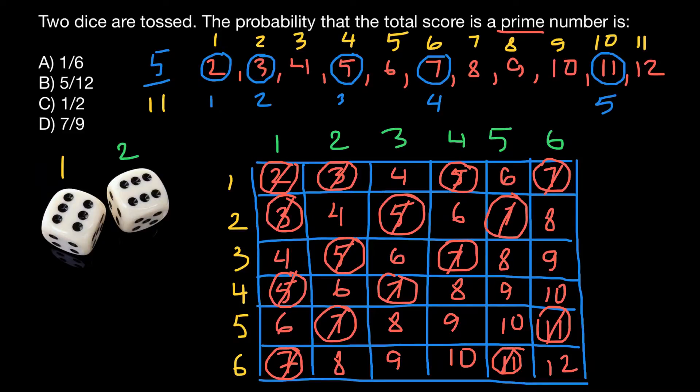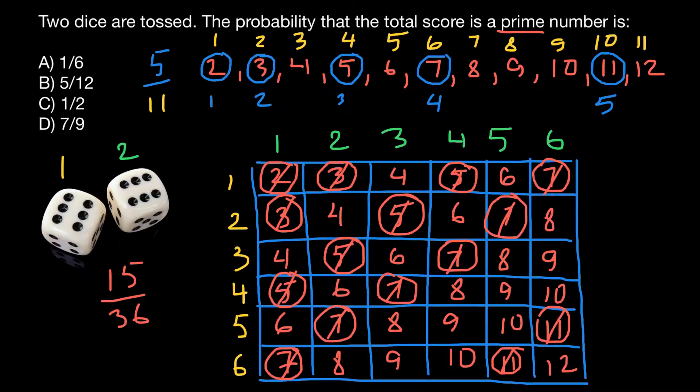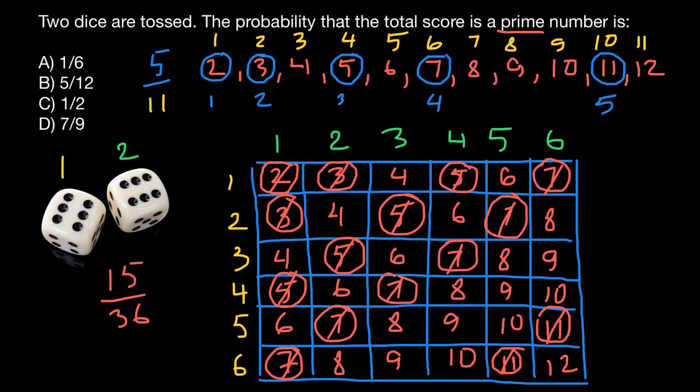Because we have 6 by 6, so we have 36 total number of variants here. And we also can reduce this number by factor 3. So our answer would be 5 over 12. If we divide 15 by 3, we are going to get 5, and if we divide 36 by 3, we are going to get 12. Now we see such an answer, answer B.